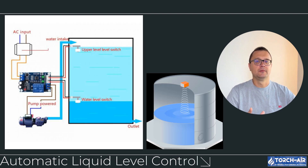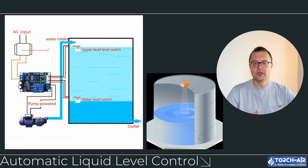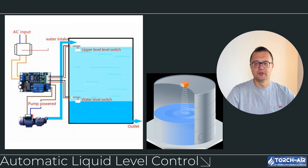Automatic liquid level control. Maintaining the correct liquid level in the scrubber is essential for smooth operation. Too little liquid reduces scrubbing efficiency, while too much can cause overflow and reduce overall performance. Automatic drain: when the liquid level reaches the maximum limit, the system automatically activates a pump to drain excess liquid, sending it to a designated drain or treatment system. Automatic refill: if the liquid level drops too low, the automated system triggers a refill, adding the required amount of water or absorption solution. Liquid level sensors constantly monitor levels in real time and signal when to activate the drain or refill function.